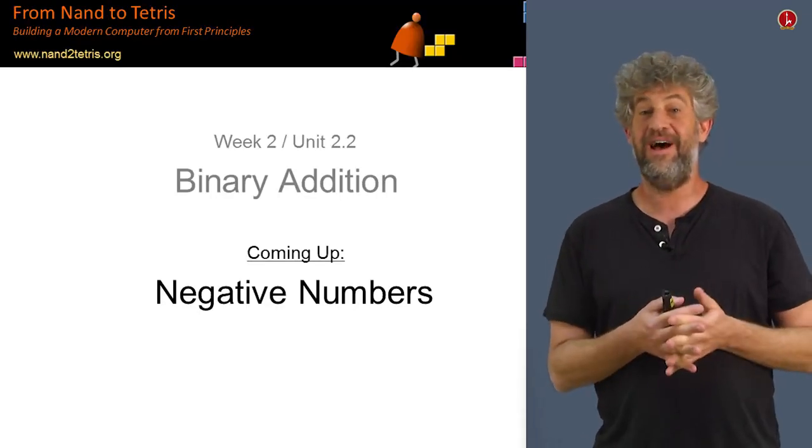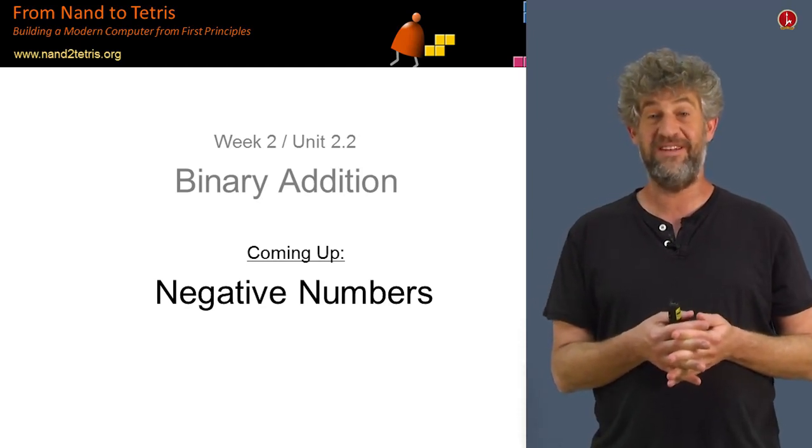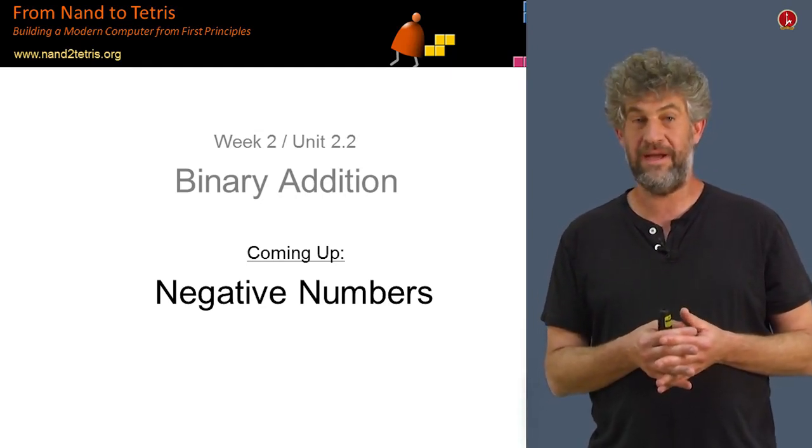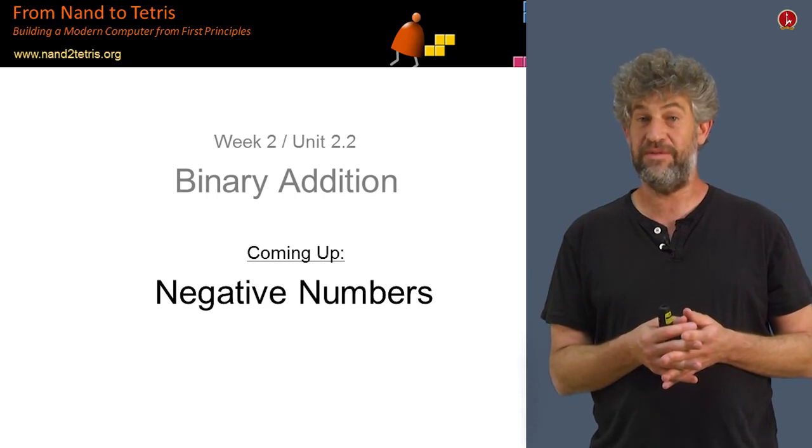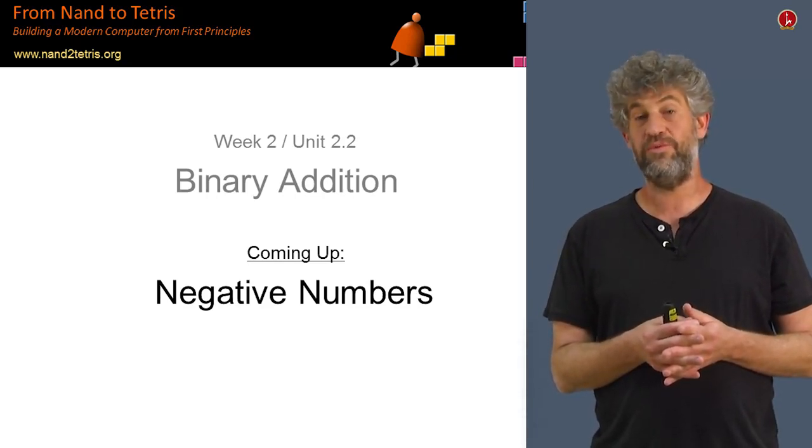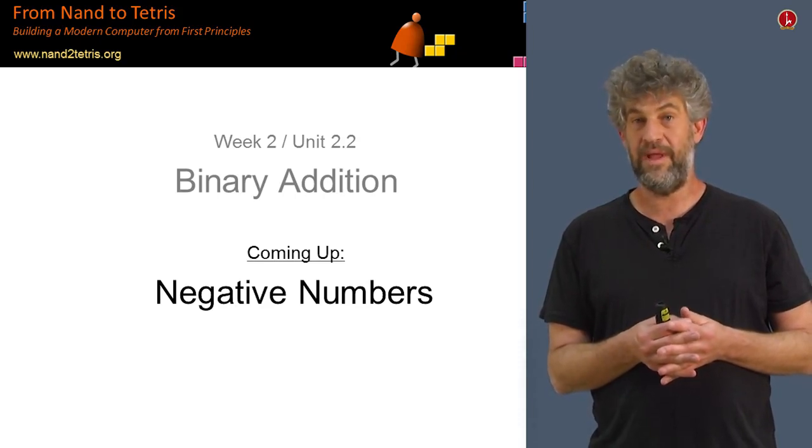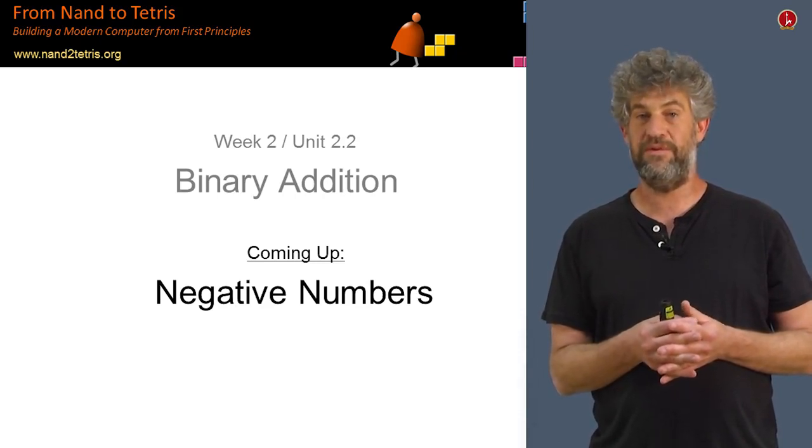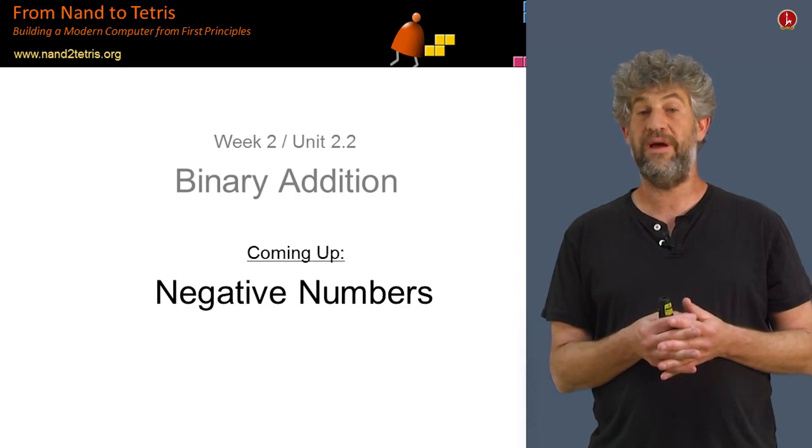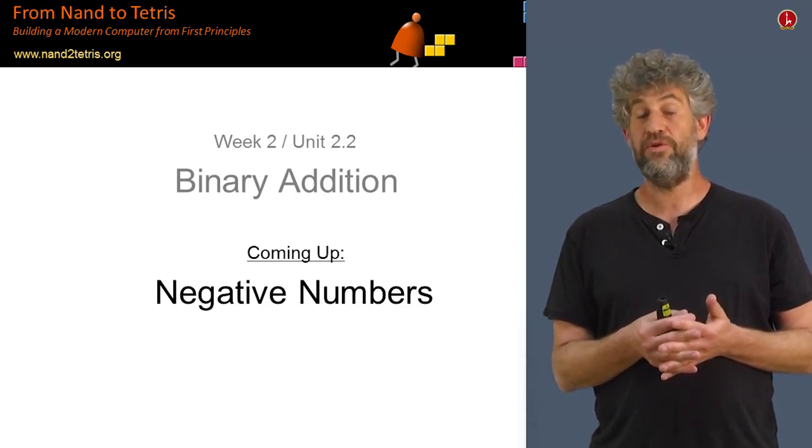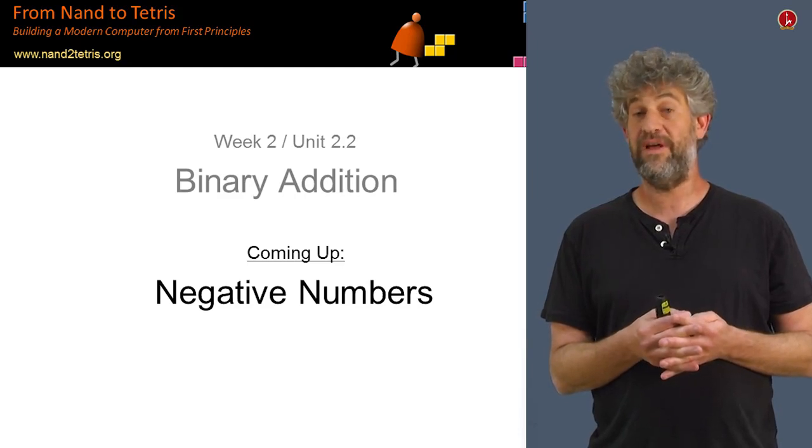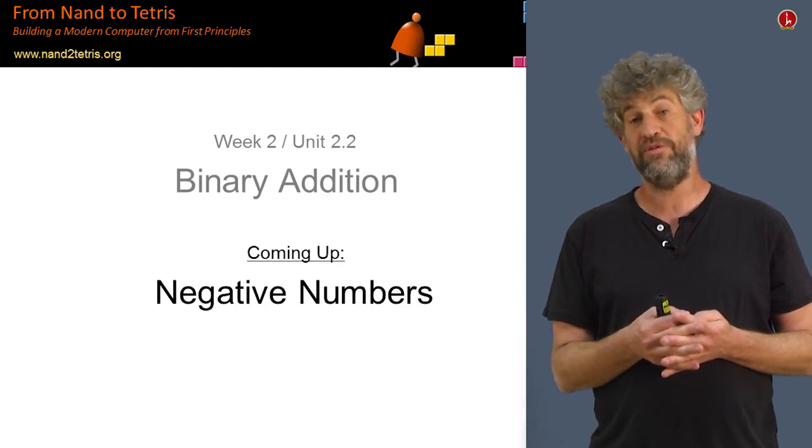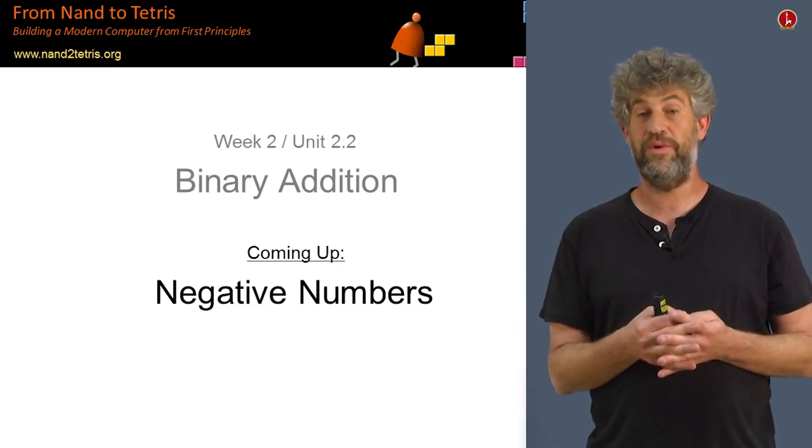So we've just learned how to add two numbers in a very concrete sense of building the chips that actually do that. The next unit will actually go back and actually look at how do we represent negative numbers, something that we still owe you from last unit. Once we do that, it will turn out that we will get subtraction for free. After we get that under our belt, then we'll go to the capstone of this week's lecture, which is building a complete arithmetic logic unit. And it turns out that most of the cleverness is already done. The most clever thing that we have in an ALU unit is just adding two numbers. But of course, we need a lot of logic around it. And that's what we will do in the fourth unit.